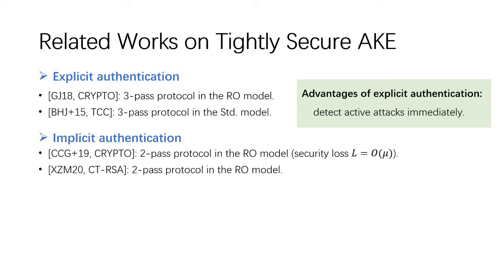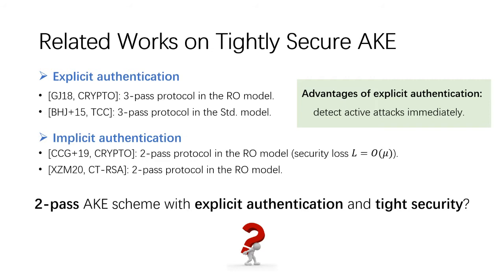Once the authentication fails, the protocol execution stops and no subsequent messages follow anymore, avoiding unnecessary computation and communication. Therefore, the natural question is: can we construct two-pass AKE scheme with explicit authentication and tight security?